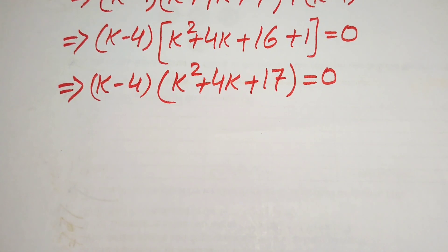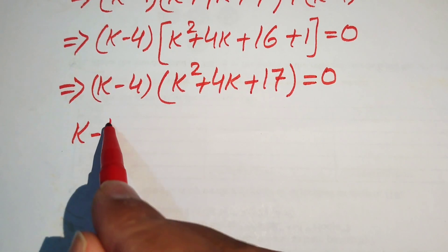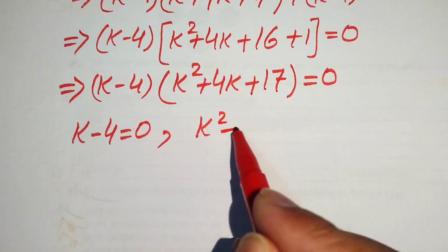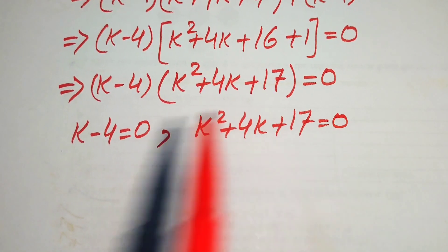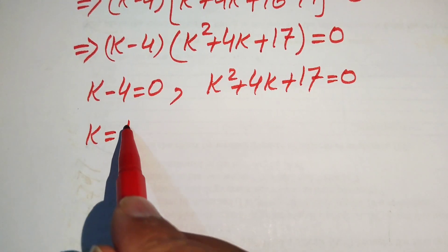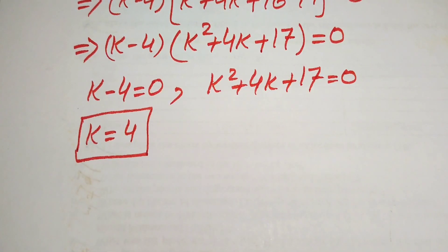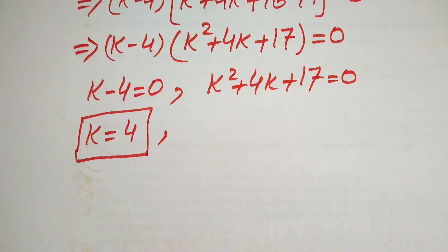We have two factors multiplied together equal to zero. Setting each factor equal to zero: k minus 4 equals 0 gives k equals 4, which is the first real root. To find the other roots, we solve the quadratic equation k squared plus 4k plus 17 equals 0, where the coefficients are a equals 1, b equals 4, and c equals 17.